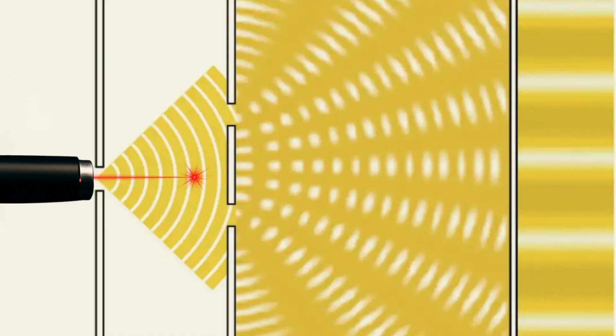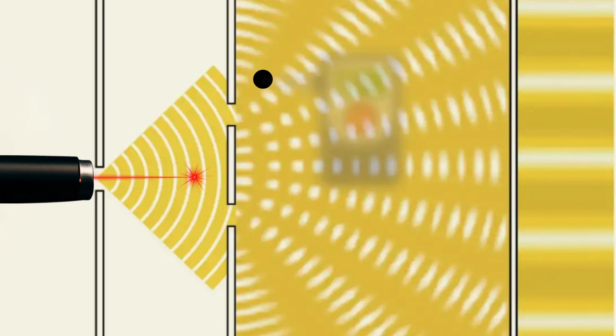In the dark bands of the interference pattern, light hasn't truly vanished. Rather, our detectors simply can't interact with photons in that specific quantum state.